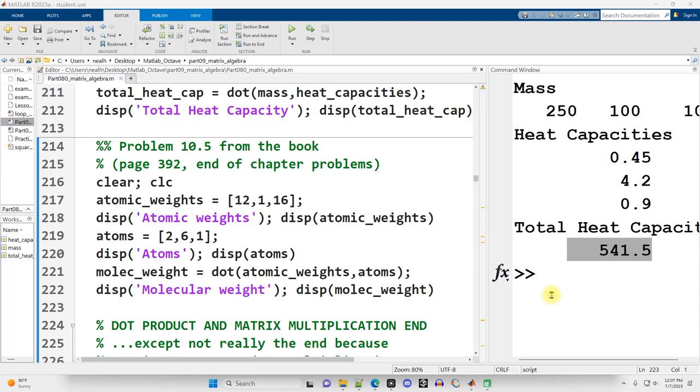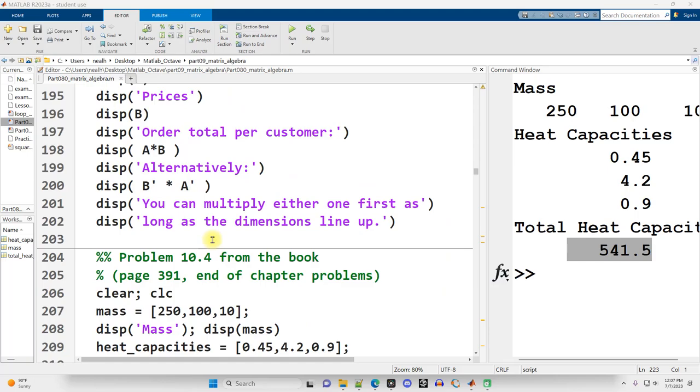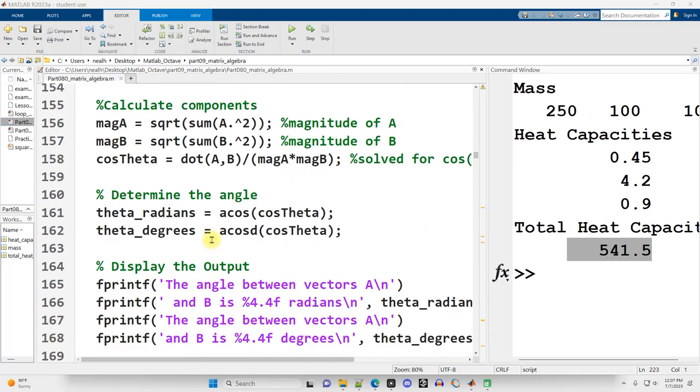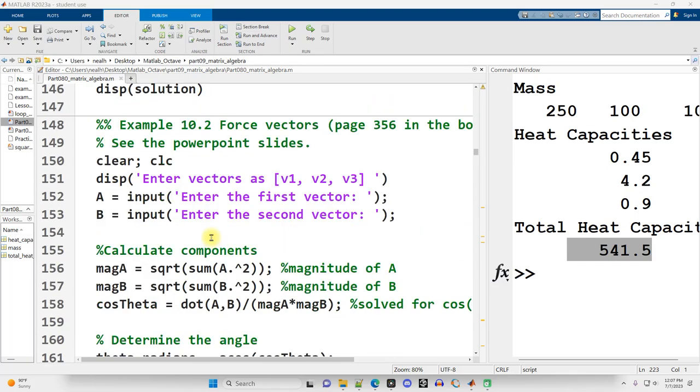This video is continuing right where the previous video left off. I'm in Part 080 Matrix Algebra. All the code that I'm going to show you in this video works perfectly in Octave exactly the same way as I'm demonstrating it here in MATLAB. I'm going to scroll up. I skipped this in the previous video because there's some background information I need to give. It's around line 150 of the document, linked to all these documents in the video description.